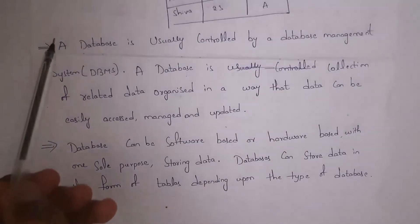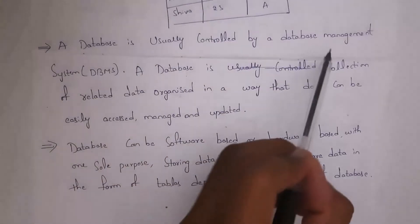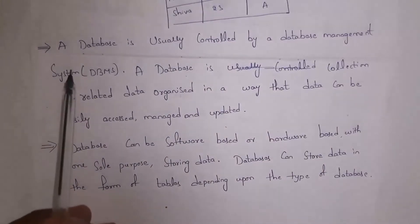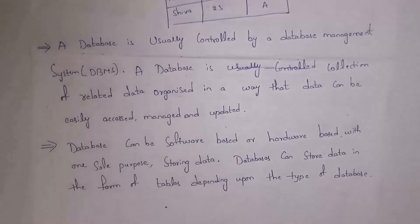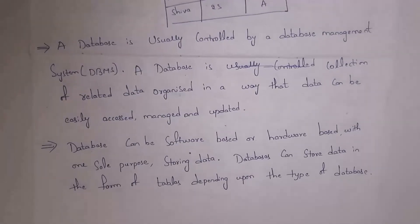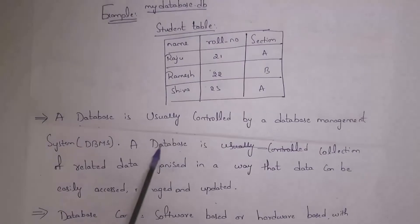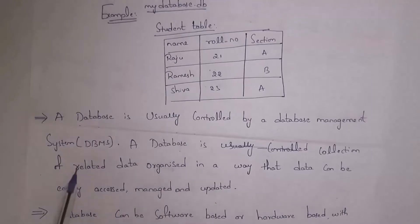A database is usually controlled by a Database Management System, shortly called DBMS. DBMS is a software by using which we can create a database and perform various operations on it, like creating tables, inserting data, modifying data, and deleting data. A database is a collection of related data organized so that data can be easily accessed, managed, and updated.